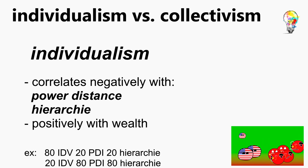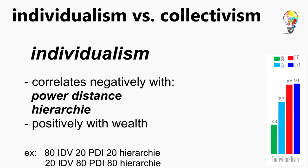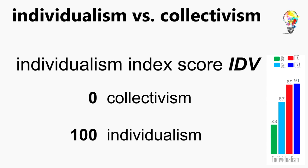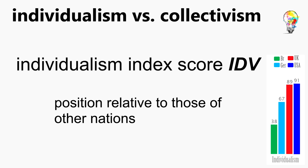Individualism is negatively correlated to power distance, meaning high scores on individualism are related to low scores on power distance and vice versa. Hierarchies correlate positively with collectivism and power distance, while individualism is negatively correlated — because in groups there is usually a leader and a hierarchy is established. In addition, individualism is positively correlated with wealth and the PDI is negatively correlated with it. But if you compare rich with rich countries and poor with poor, this correlation disappears. The individualism index score is scaled from 0 for low to 100 for high individualism, with each nation's position represented relative to other societies.